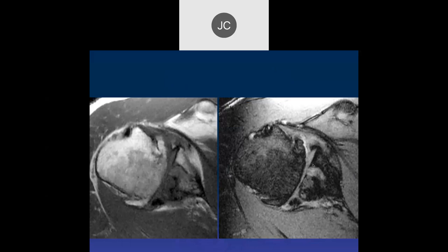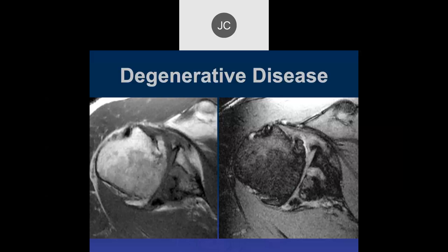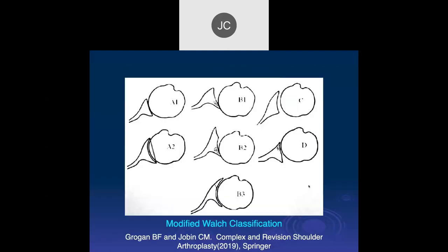Another example: large marginal osteophytes, big subchondral cystic changes, disruption of the subchondral bone, grade four chondromalacia, and in more severe stages remodeling of the articular surfaces with flattening of the humeral head. This leads to chronic limited range of motion because you no longer have normal articular anatomy. There's a classification for the morphologic changes of degenerative disease within the shoulder.